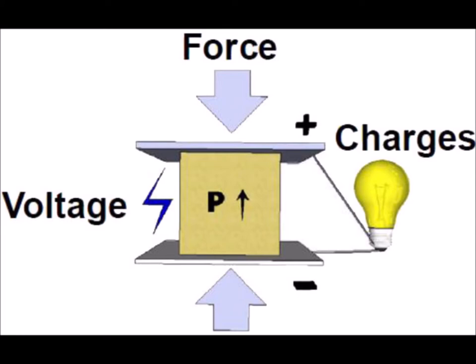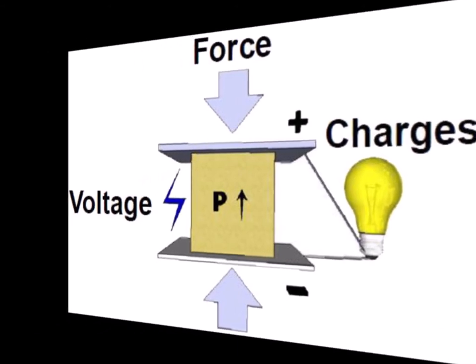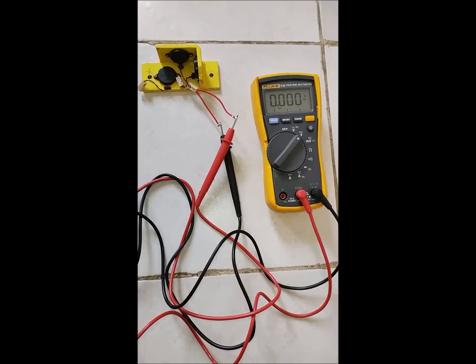Here you can see that if the piezoelectric material is put under force, then a charge will develop. The piezoelectric material is in the center, force is applied up and down, and the shape of the material changes. As a result, voltage develops. Since there is an electrical path, electricity will flow — as you can see, a bulb is connected via a cable and it glows.